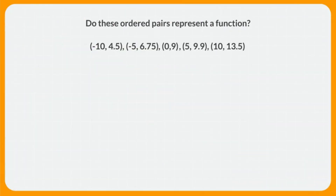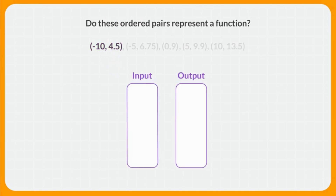Let's try this problem together. We're going to figure out if these ordered pairs represent a function. In each of these ordered pairs, the x represents the input and the y represents the output. We'll use an input-output map to organize the information. Let's start with this point. Which number is the input? The x value of negative 10 is the input. So under input, we'll put negative 10, and across from that, under output, we'll add 4 and 5 tenths.